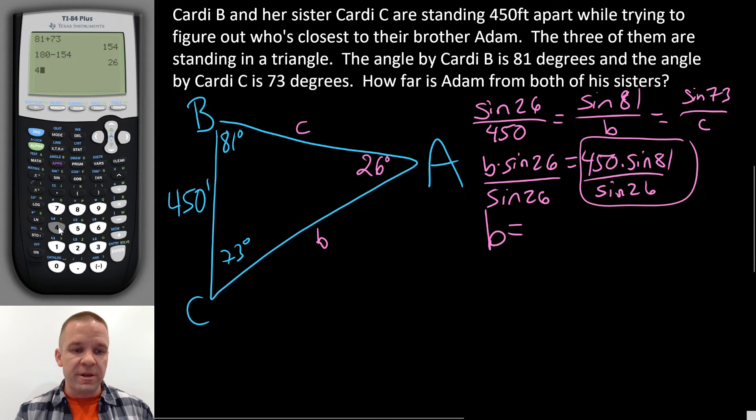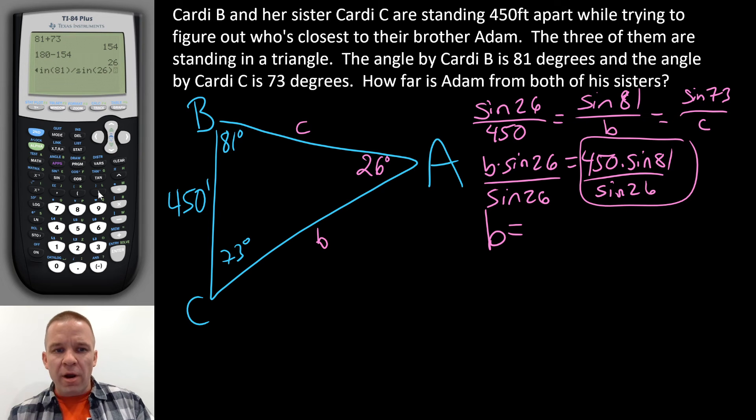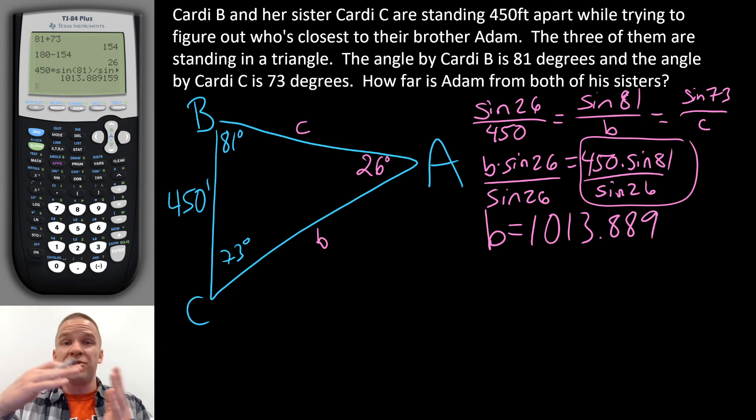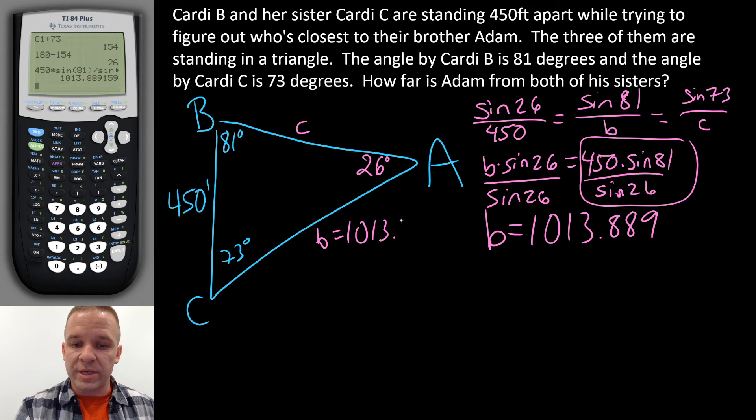Let's pull up that TI-84. I'm going to have 450. And before I hit enter, notice how I have the parentheses closed after that 81. That's super important. It really doesn't matter with the 26. I'm just going to do it out of best practice here. It would screw up the problem if I didn't do that with the 81. So we get 1013.889 feet. It seems like a big number. But when you look at the angle of 26 degrees for 450, that 81 is a way bigger angle. So it should be a bigger side across from it. So that's this one right here. 1013.9.